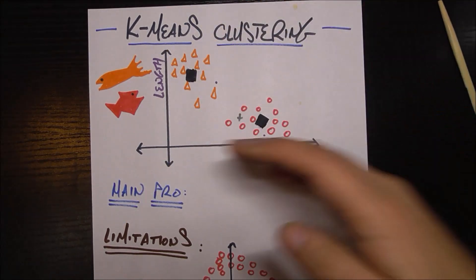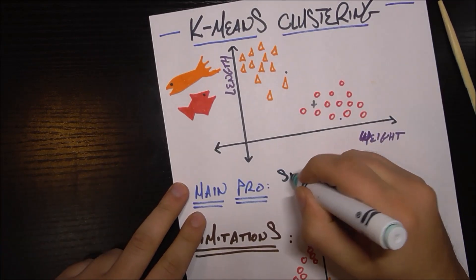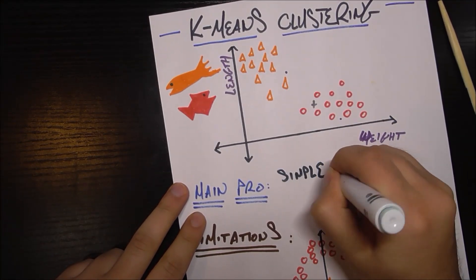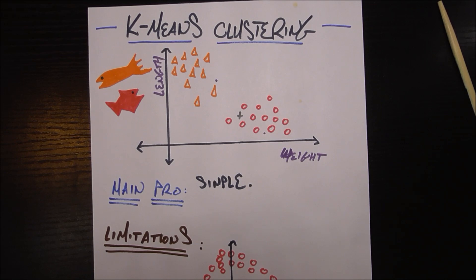Now, let's talk about some of the pros and cons of k-means clustering. The main pro, I would say, is its simplicity. And that is in terms of simplicity of understanding it. We saw that we went through it in just a couple minutes. And also, its simplicity in computation.